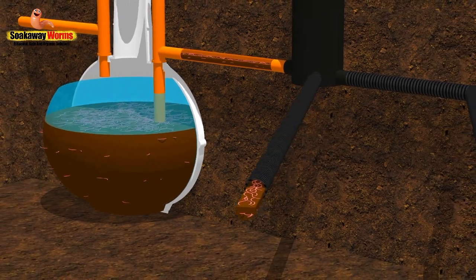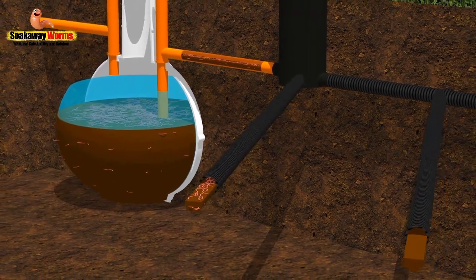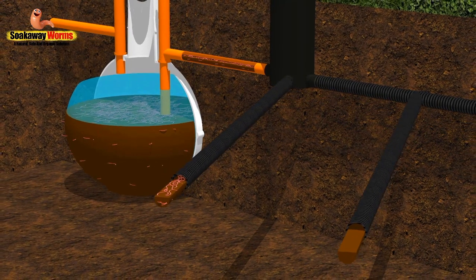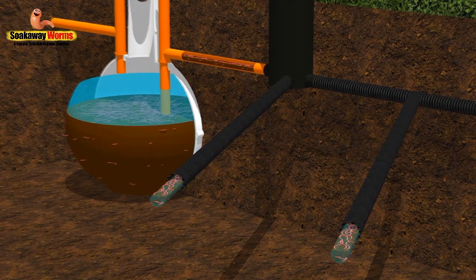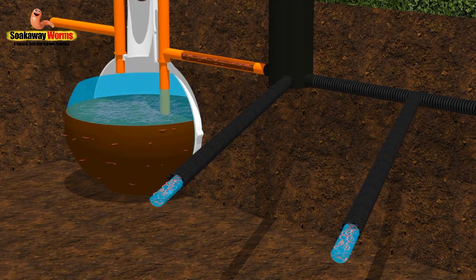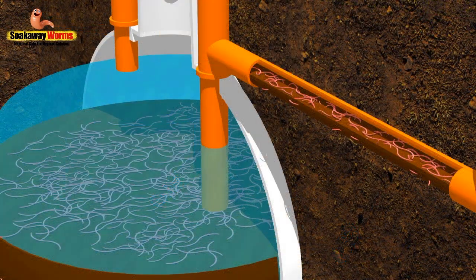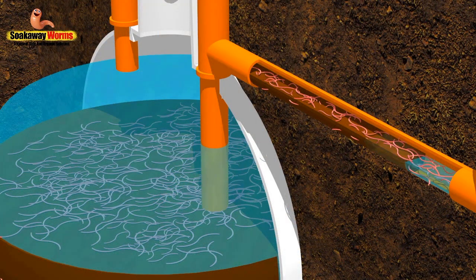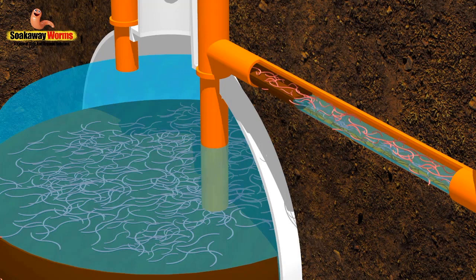As the worms eat all the fat and the grease and the sludge, they'll start cleaning and unblocking the sludge and the waste from the soak away pipes, allowing the waste water in the soak away pipes to start flowing freely once again, enabling it to drain away naturally through the soak away and into the topsoil.